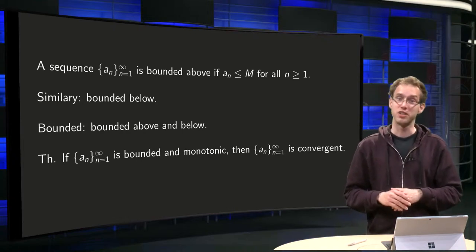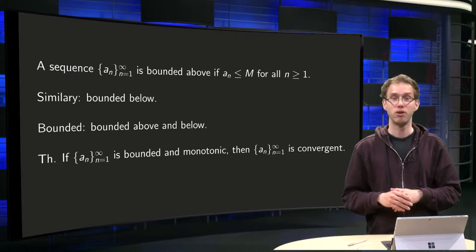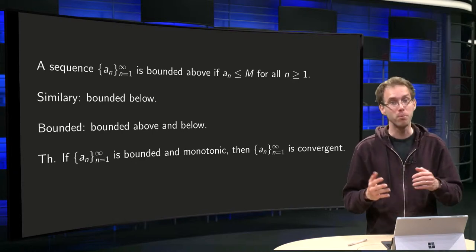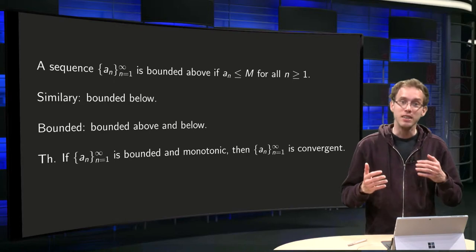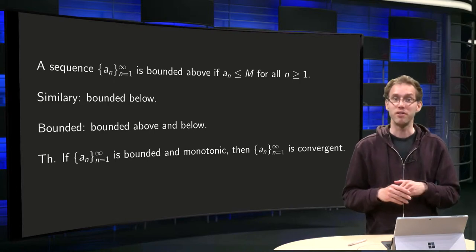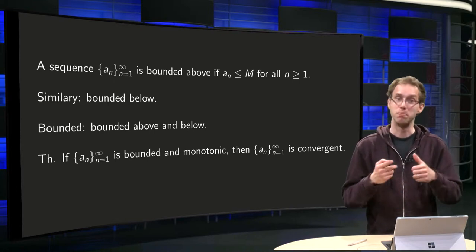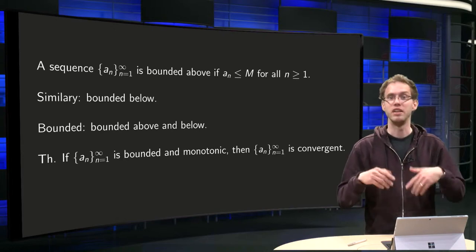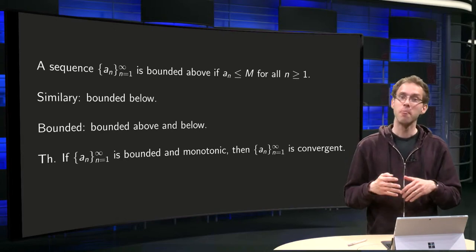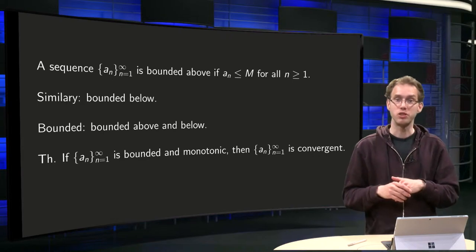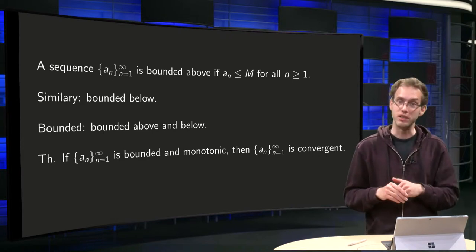Boundedness of a sequence is defined similarly to boundedness of a function, so you can probably guess how. This boundedness of sequences will give us a nice theorem. If a sequence is bounded and monotonic, it's automatically convergent. And we can sometimes use this result to compute the limit, as you will learn in this video.